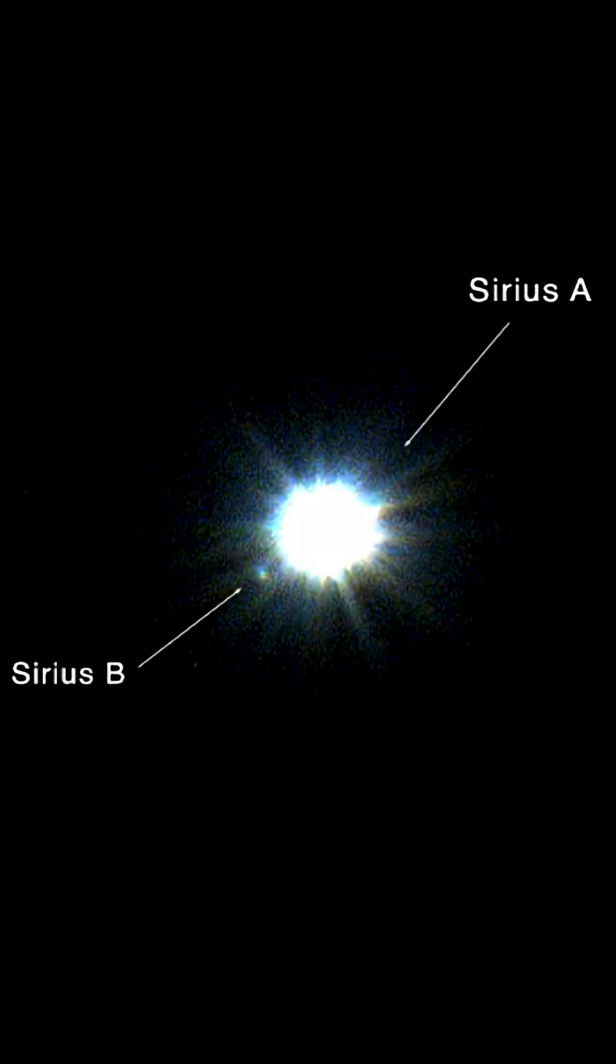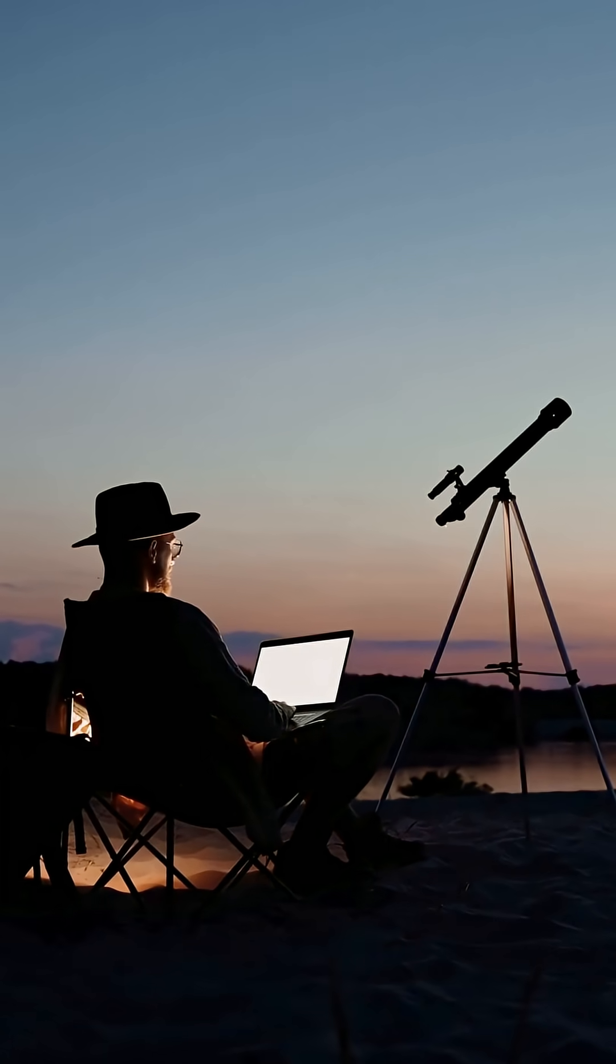And it's not alone. Sirius B, a tiny white dwarf, orbits nearby. It's the crushed core of a dead star, invisible to the naked eye but famous among astronomers.